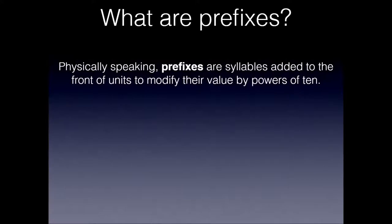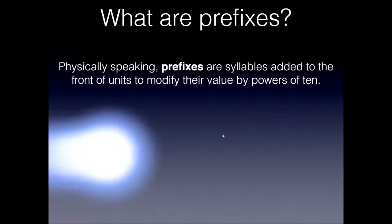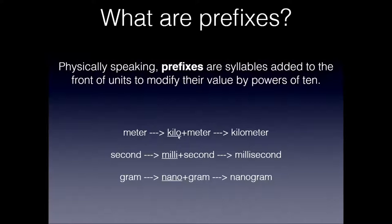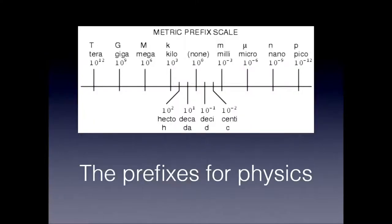So let's first talk about prefixes. Physically speaking, prefixes are the symbols that are added to the front of any word, but in physics especially, or chemistry, they're added to the front of units to modify their value by specifically powers of 10. Some examples would be things like kilo, milli, and nano. I can add kilo to the front of meter and it becomes a kilometer. I can add milli in front of second, I get millisecond. And I can add nano in front of gram, and I get nanogram. These prefixes have different meanings depending on which one we use.